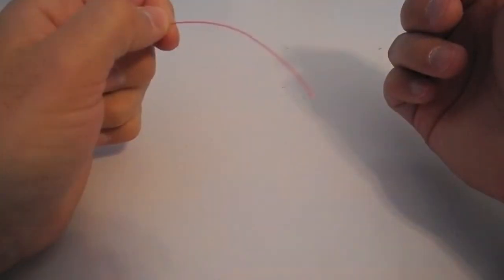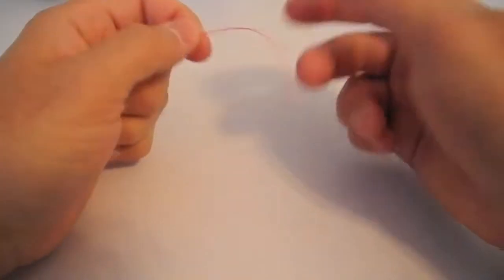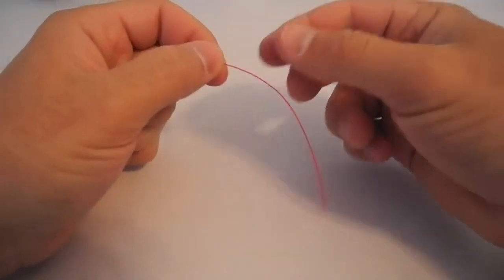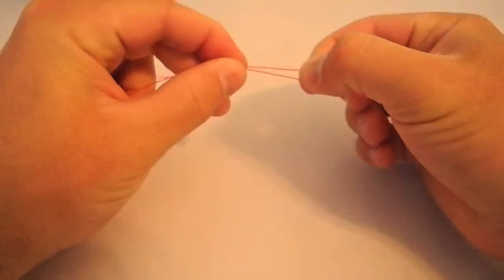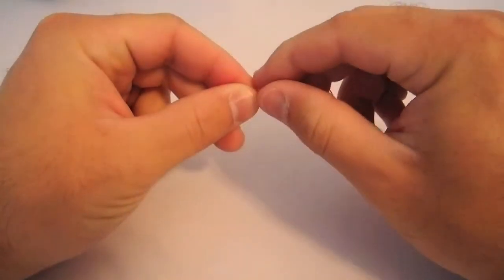We're going to pretend this is the back end of your leader and you want to tie a loop in it so you can attach it to your looped fly line. What you're going to do is just fold over the material just like so and make a loop.